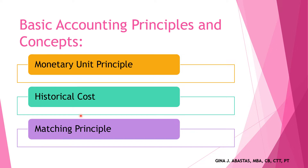For example, the cost of fixed assets is recorded at the date of acquisition. The acquisition cost includes all expenditures made to prepare the asset for its intended use — including the invoice price, freight charges, insurance, and installation cost, if any.